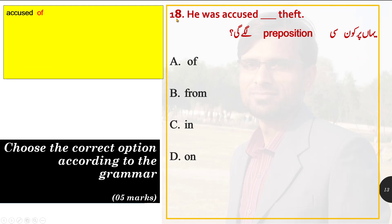Option number 18: 'he was accused dash theft.' Which preposition fills the blank? Of, from, in, or on? Always remember that the verb 'accused' is always followed by the preposition 'of'. So option A is correct: he was accused of theft — a charge of theft was brought against him.